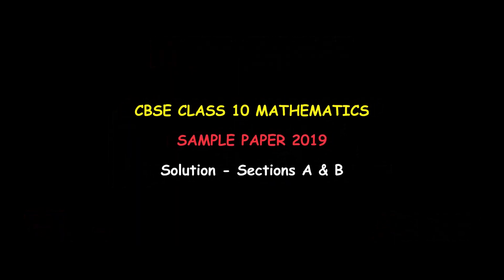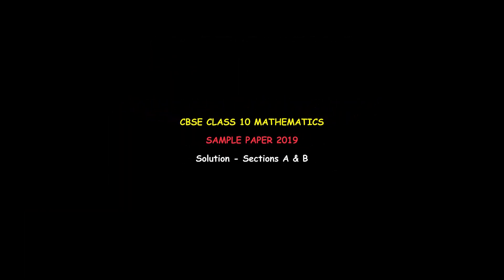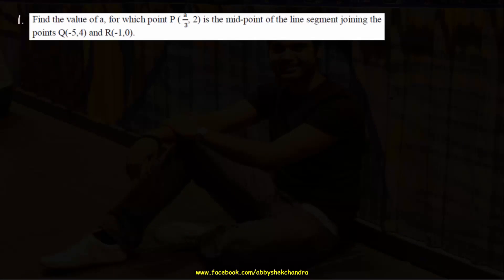In this lecture we are going to solve the CBSE sample paper 2019. Question 1: find the value of a for which point P(a/3, 2) is the midpoint of the line segment joining the points Q(−5, 4) and R(−1, 0).